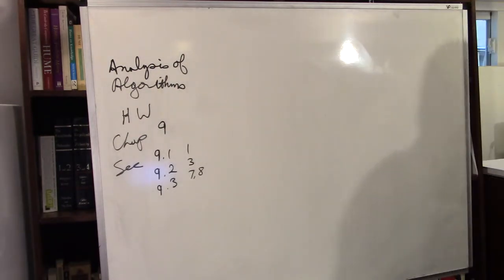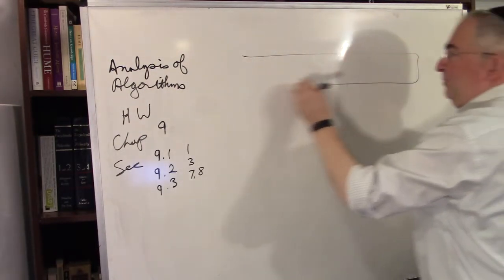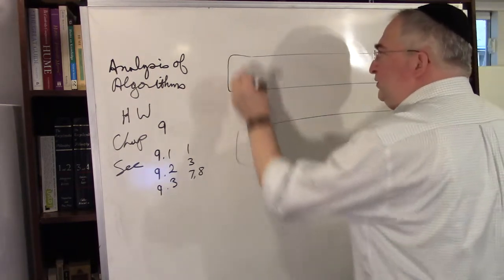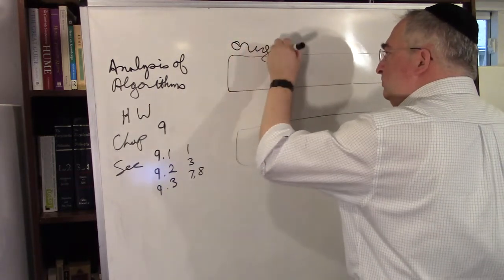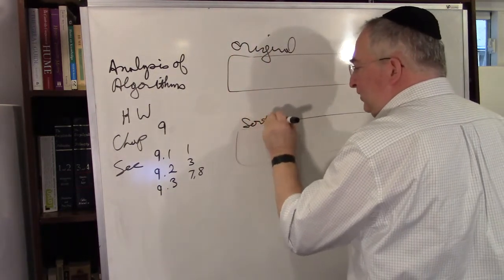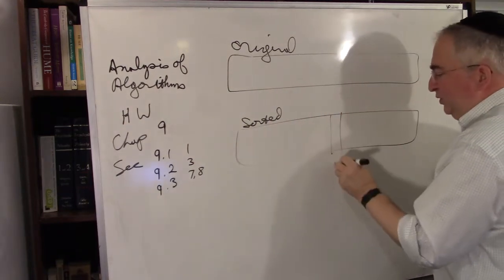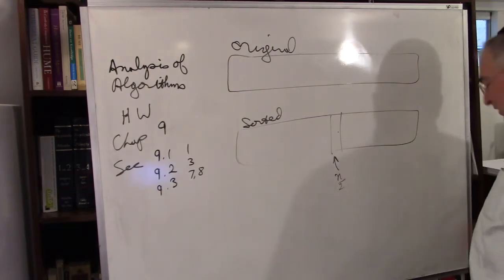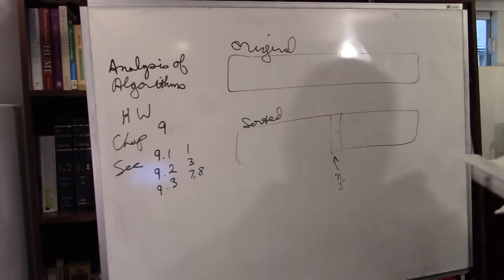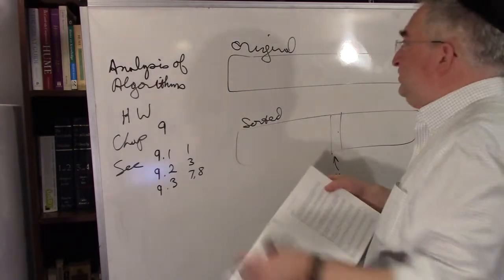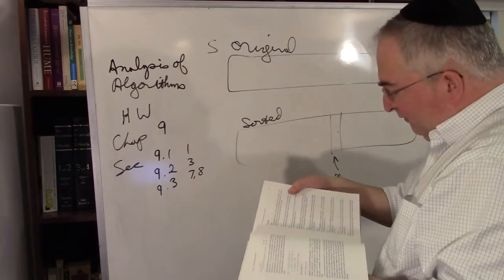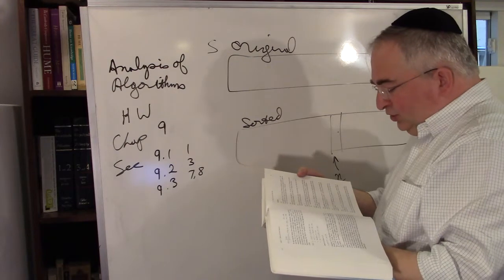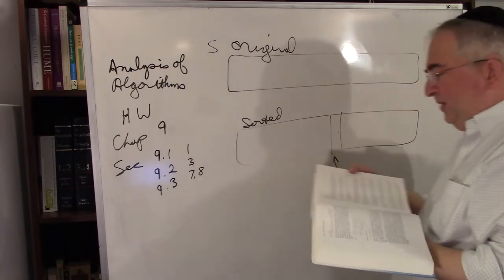Let's just imagine this. Imagine you have a bunch of numbers. If you sorted them — here's original, here's sorted — this would be your median, so this would be the n over 2 position. That would be your median. Now listen to what they want: given a set S of n distinct numbers and a positive integer k, determine the k numbers in S that are closest to the median of S.